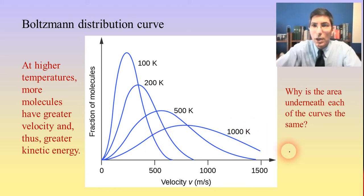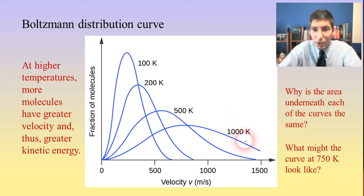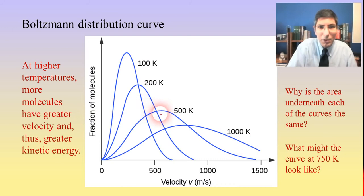Now let's see if we can interpolate something here. What might this curve look like at 750 kelvins? We have 100, 200, 500, and 1,000 kelvins. Well, what it's going to look like is somewhere in between the 500 and 1,000. I'm not very good at actually drawing this, but let's just do our best here. I'm going to do my best, and we know that you'll have the same area underneath the curve.